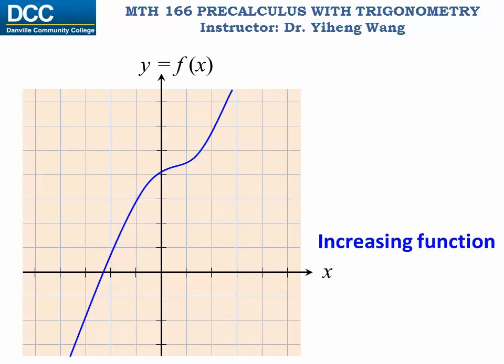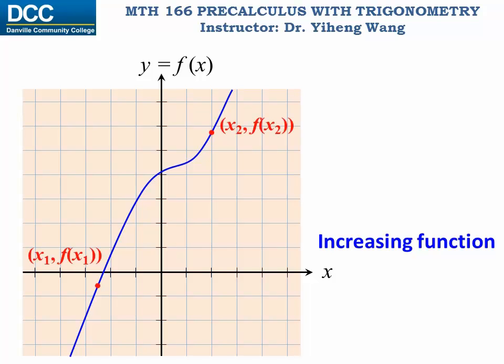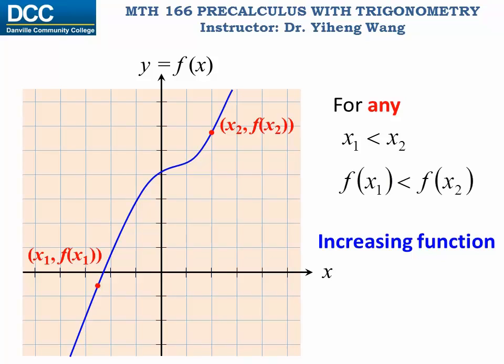For a function to be increasing, visually from left to right the function value increases. Algebraically, for any two points on this function with coordinates x1, f(x1), and x2, f(x2), as long as x1 is smaller than x2, then f(x1) must also be smaller than f(x2).